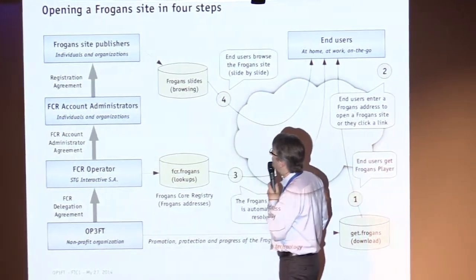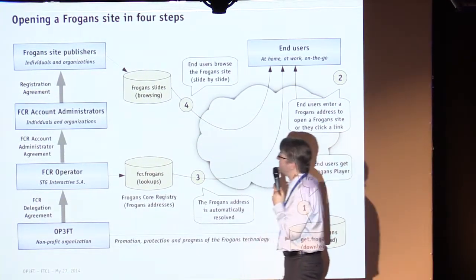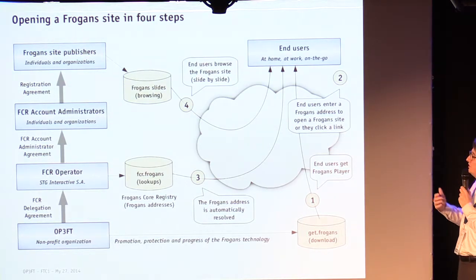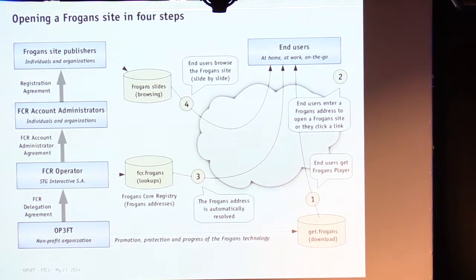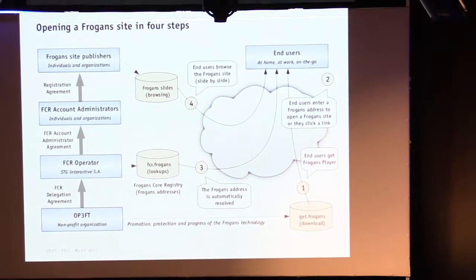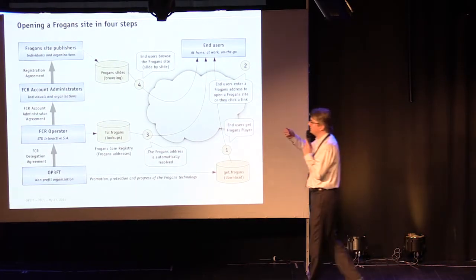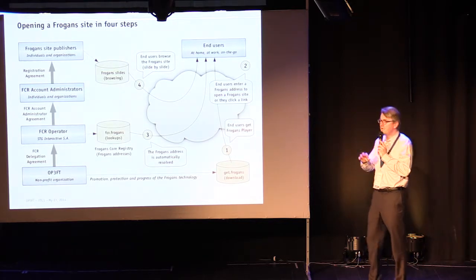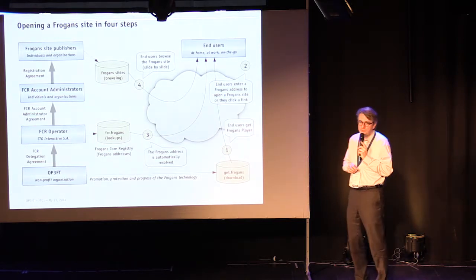This is called 'business opportunities in the internet ecosystem' because the aim is to allow a new ecosystem to blossom on top of the FROGANCE layer. Professionals, startups, and others are most welcome to come and develop their own business activities on this layer. To summarize: only two boxes in dotted lines represent new elements; the existing players will not change fundamentally.